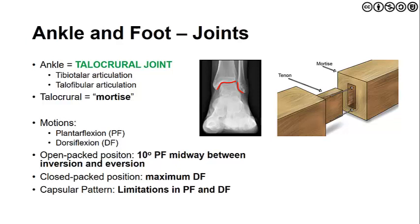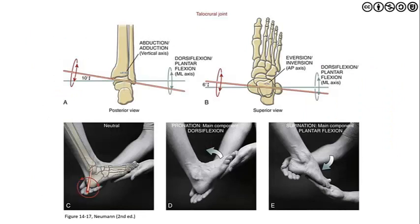The open-packed position of the talocrural joint is approximately 10 degrees of plantar flexion with the foot somewhere between inversion and eversion. The closed-packed position is maximum dorsiflexion, and the capsular pattern involves limitations in both plantar flexion and dorsiflexion. As we move into dorsiflexion, a degree of pronation occurs; as we move into plantar flexion, a degree of supination occurs, due to the vertical, anterior-to-posterior, and medial-lateral axes.